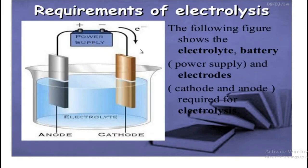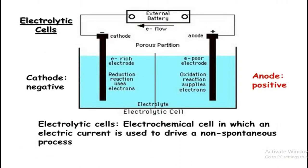Looking at the working of the electrolytic cell: electrons flow from anode to cathode in the external circuit. The cathode is the negative electrode and the anode is the positive, electron-poor electrode. Negative ions move to the anode and lose electrons to the electrode — loss of electrons is oxidation — so oxidation occurs at the anode. Electrons are then drawn by the external battery from the anode.